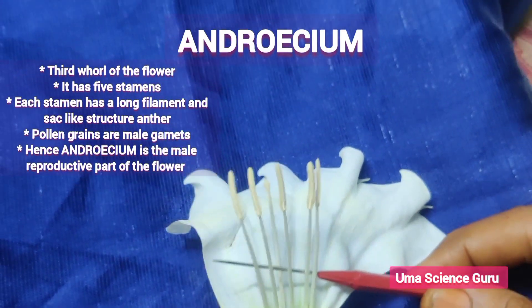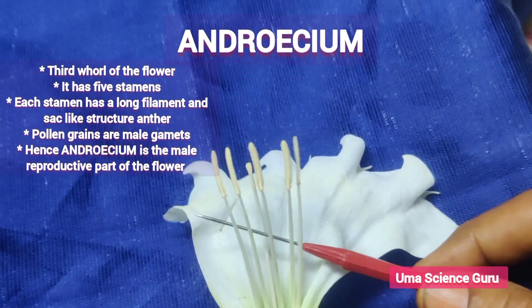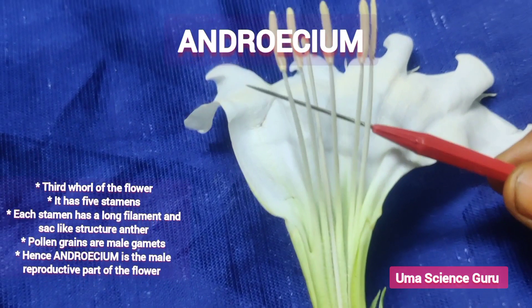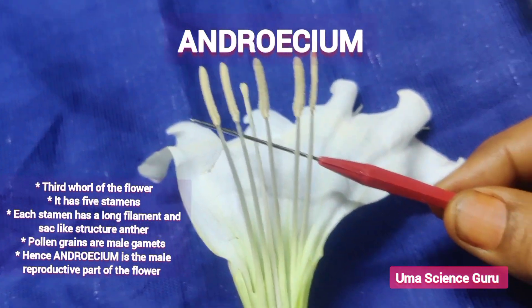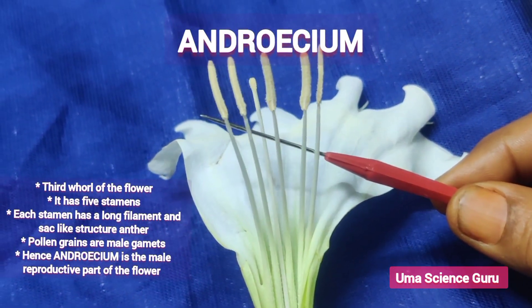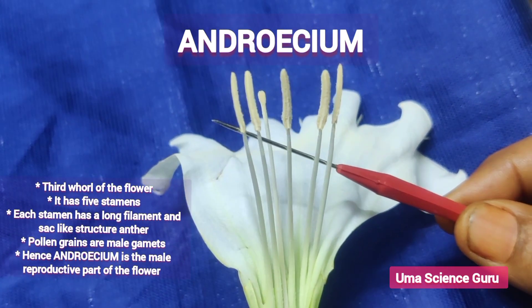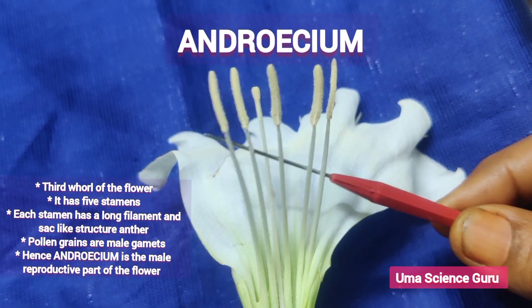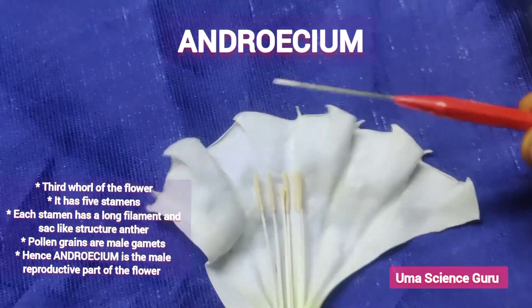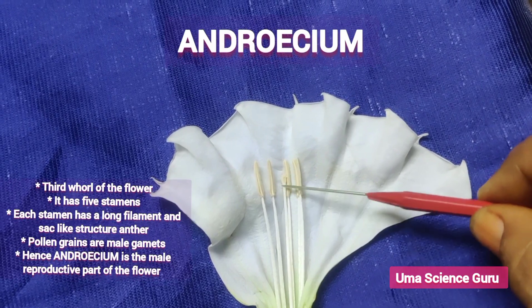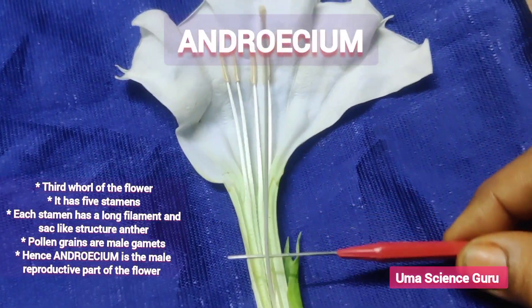Students, carefully observe that the stamens are attached to the petals. Each stamen has a long filament and a sac-like structure called the anther. Pollen grains are produced in the anther. Pollen grains are male gametes. Thus, the androecium is the male reproductive part of the flower.